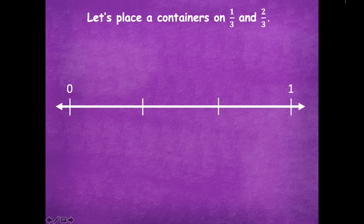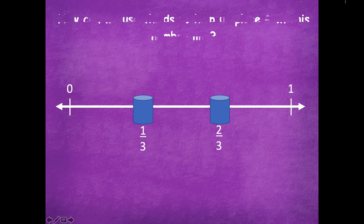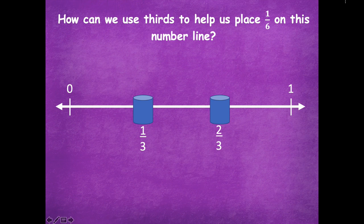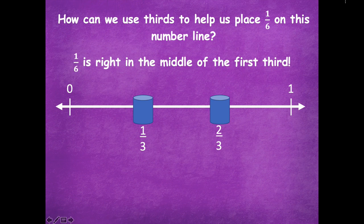Let's place a container on one-third and two-thirds. We're actually going to do a bean bag toss with this, so I need these containers at certain places. I'll label those so I don't forget. Now, how can we use thirds to help us place one-sixth on the number line? One-sixth is right in the middle of the first third. When you're splitting into thirds, if you want to split into sixths, just draw each one of those thirds in half and you'll have your sixths labeled as well.